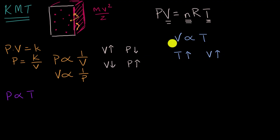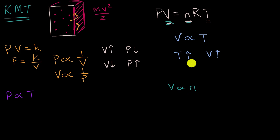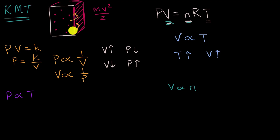Another relationship is between volume and the number of moles. If everything else is held constant, the ideal gas law tells us that volume is proportional to the number of moles of gas. If you double the number of particles while keeping pressure and temperature constant, you'd have to double the volume. And if you doubled the volume without changing pressure or temperature, you'd need to put twice as many particles in to maintain sufficient collisions with the container walls. This is known as Avogadro's Law.